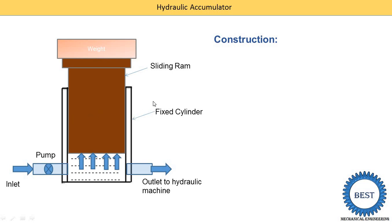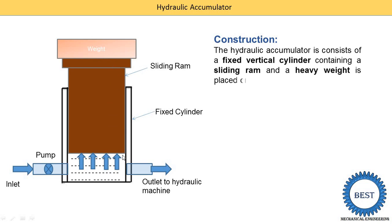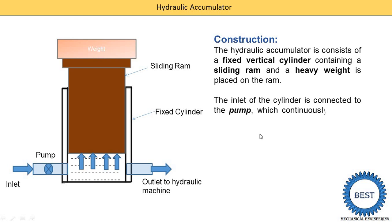The second component is the sliding ram. The ram slides inside the fixed cylinder, which is why it is known as the sliding ram, because its motion is in the sliding direction. The third component is the weight that is placed on the sliding ram. On one side of the cylinder an inlet is provided, connected to a pump, and on the other side there is an outlet connected to different hydraulic machines such as the lift, crane, and hydraulic press.